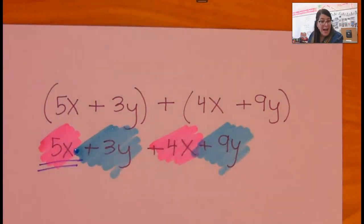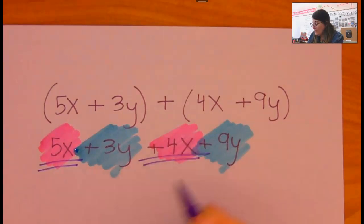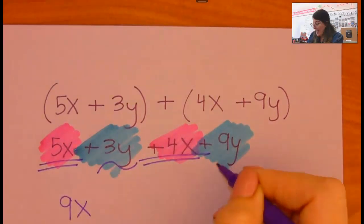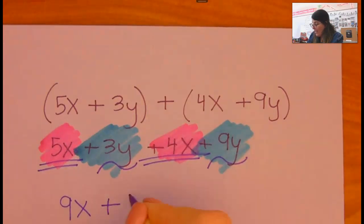So 5x, it's a positive 5x, plus 4x, that's going to be 9x. And 3y plus 9y is going to be plus 12y.